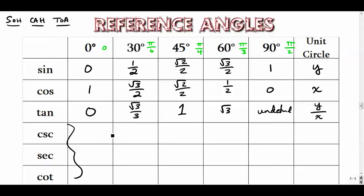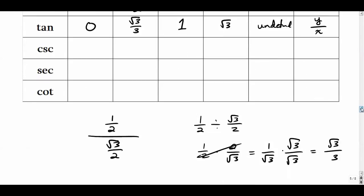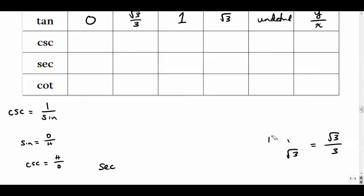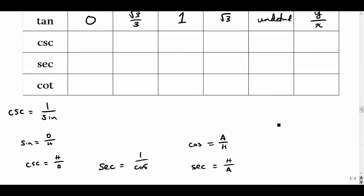Now let's discuss the reciprocal functions: cosecant, secant, and cotangent. Cosecant is the reciprocal of sine — where sine was opposite over hypotenuse, cosecant is hypotenuse over opposite. Secant is the reciprocal of cosine — where cosine was adjacent over hypotenuse, secant is hypotenuse over adjacent. And cotangent is the reciprocal of tangent — where tangent was opposite over adjacent, cotangent is adjacent over opposite.